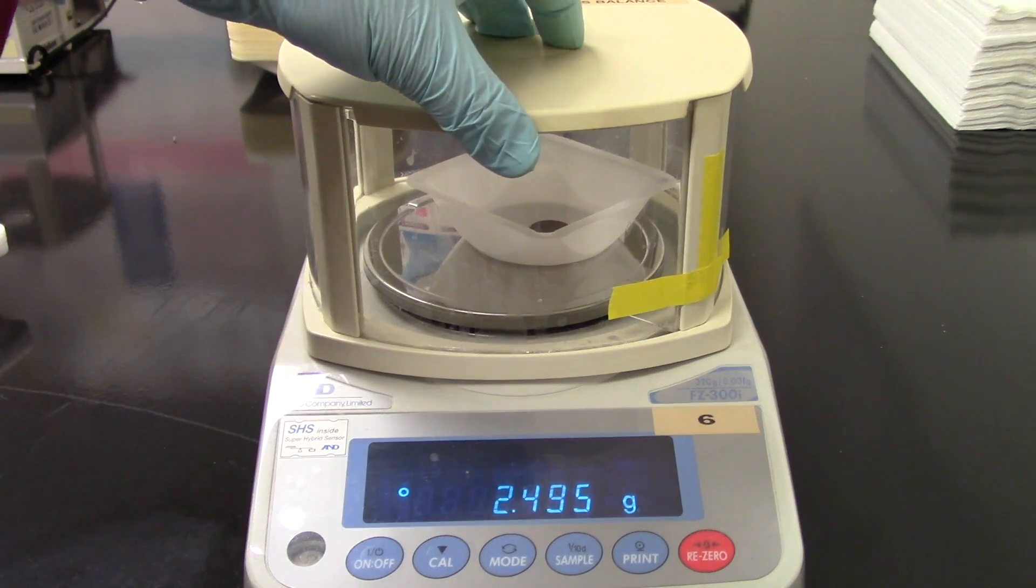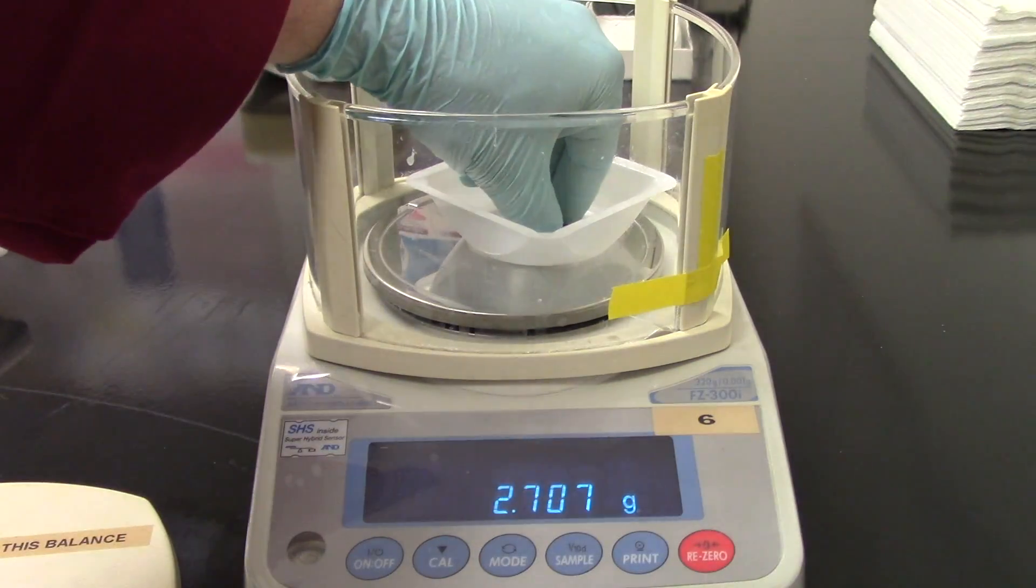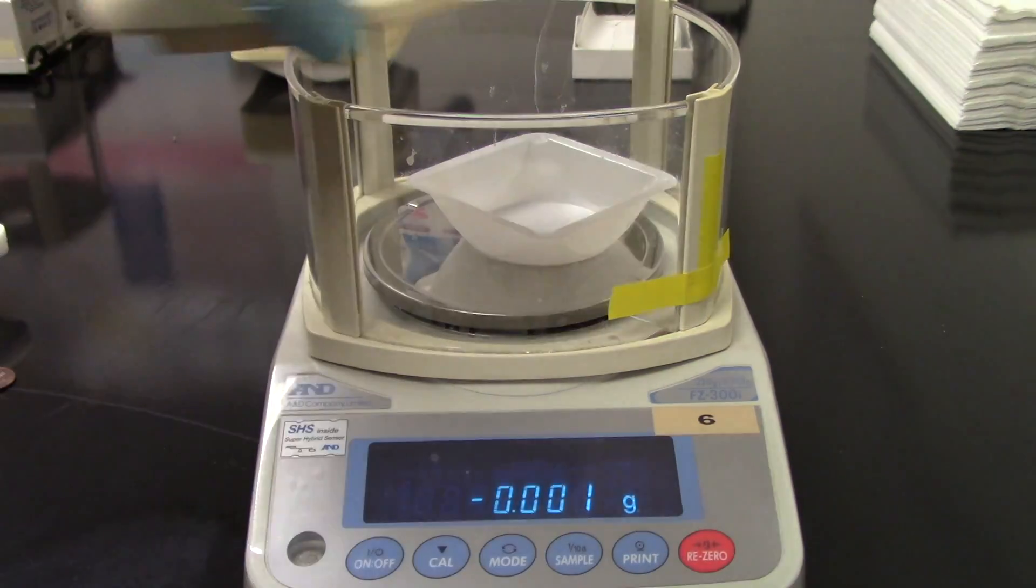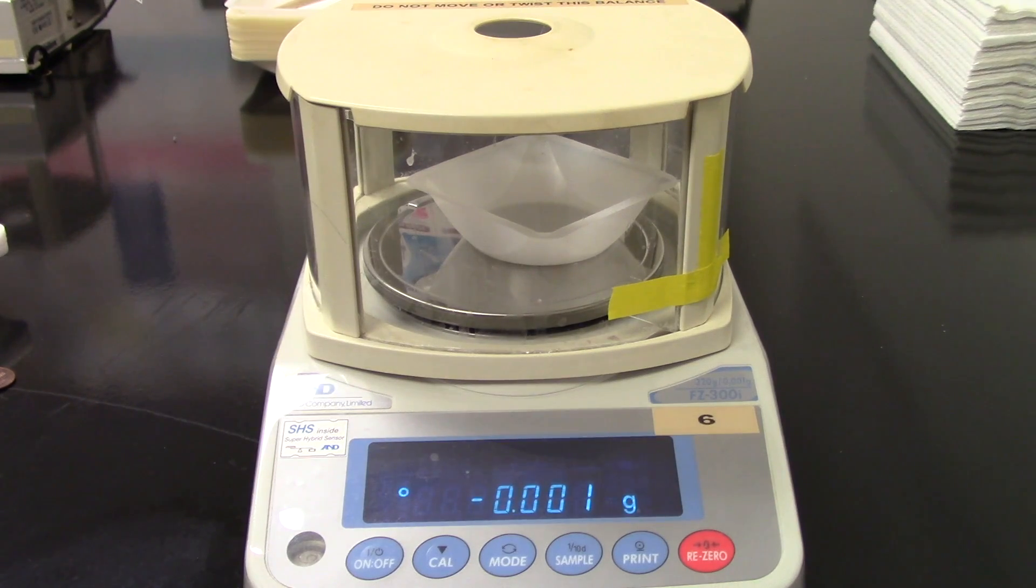All right. So that's how you use a digital scale to mass out some pennies. Now you're going to have to use this data to make a graph using the graph paper in the back of your lab manual. All right, guys. And that is the end of experiment one. I want to wish you all good luck and good chemistry. See you soon.